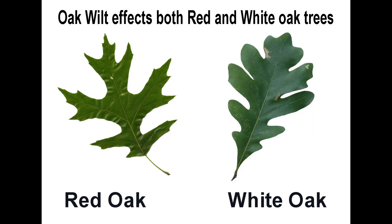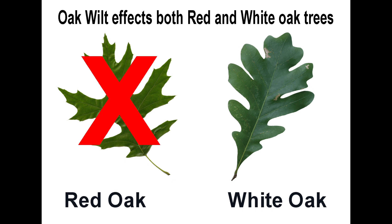Now that we know the difference between red oak and white oak, let's talk about oak wilt. Oak wilt is a fungal disease that particularly infects the red and the white oak group. However, it is especially deadly to the red oaks.